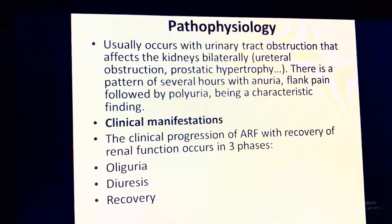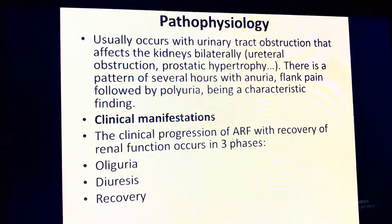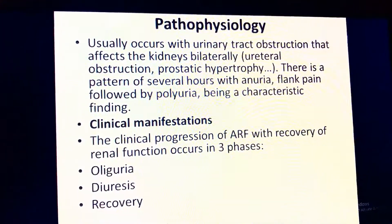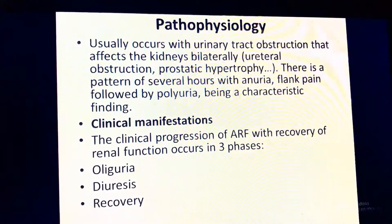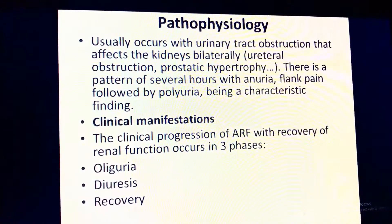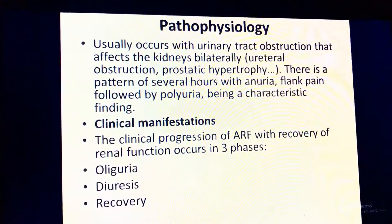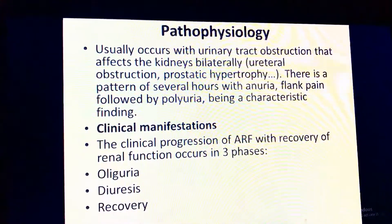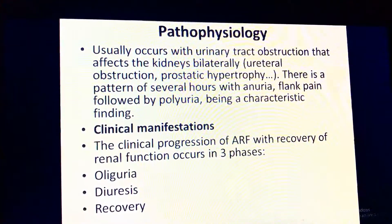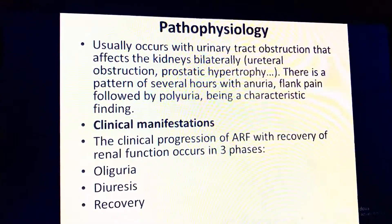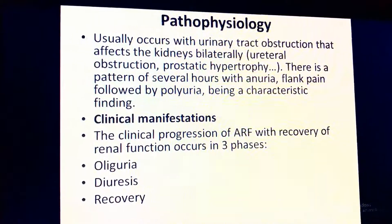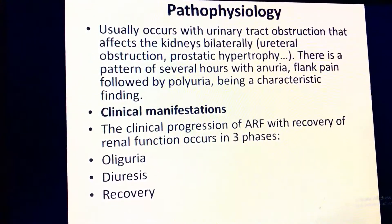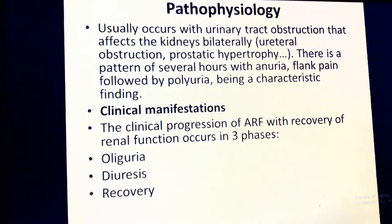Pathophysiology of post-renal failure usually occurs with urinary tract obstruction affecting both kidneys bilaterally. There is a pattern of anuria with frank pain followed by polyuria as a characteristic finding. The clinical manifestations of acute renal failure progress in three phases: oliguria when the patient is severely ill, diuresis when urine return becomes progressive, and then recovery.